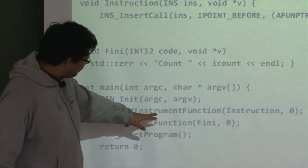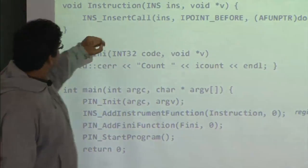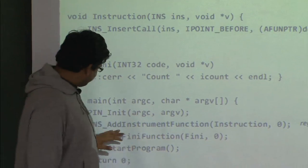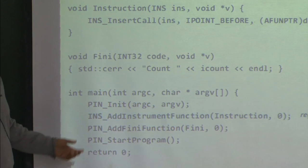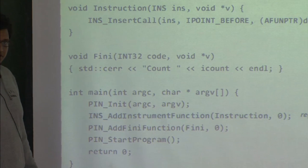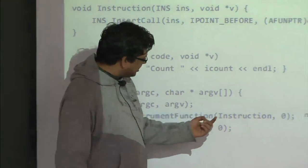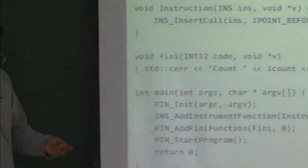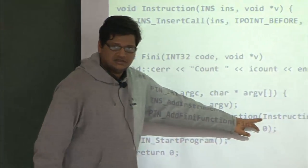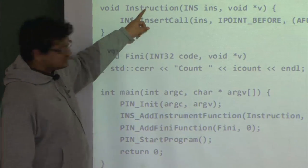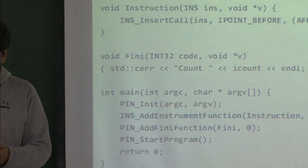INS_AddInstrumentFunction registers with PIN what instrumentation routine to call when it is about to generate code. This says: whenever PIN is about to generate code for an instruction, it should first call the 'instruction' function — the instrumentation routine.